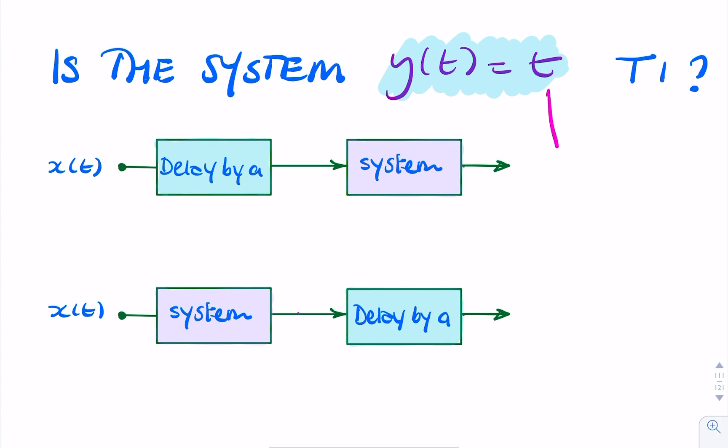And again, just by looking at that t there, clearly it isn't time invariant. The time makes a big difference because the output is equal to the time. And we said whenever you see t or n for a discrete time system explicitly given in the expression for the system, we know it's a time-varying system.